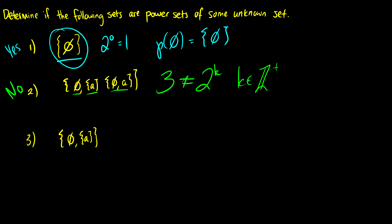Okay third question. We have the empty set and we have the set containing a. Okay so this has two which is equal to two to the one elements. So this could be a power set. What do you think it's a power set of? Well I see the element a here so I want to think okay it's the power set of the set just containing a.